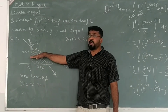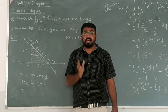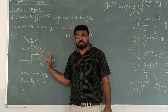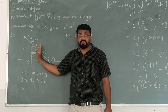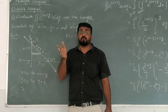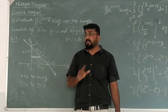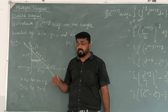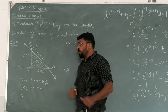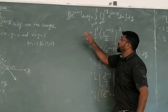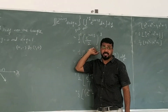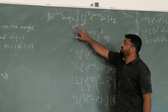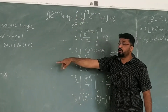If we take a horizontal strip, it means we integrate first with respect to x and then with respect to y. If we take a vertical strip, we integrate first with respect to y and then with respect to x. You decide the strip based on which variable you want to integrate with first. So we write x limits 0 to 1 minus y, and y limits 0 to 1.